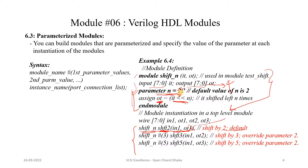Now, if I want to shift the input data by 3, I can instantiate this module like this — where this is the module name, and using a hash character I can pass the parameter value. So this is 3, and here is the instance name and input and output. Now I will get the output which is a 3-bit shifted input signal.